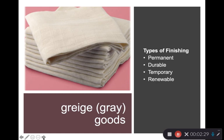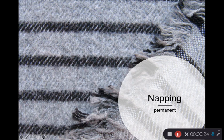A permanent finish lasts for the life of the textile. A durable finish slowly decreases over time but is expected to last at least the consumer's life of the garment. A temporary finish is washed off or dry cleaned, remaining on the product until it is cared for or cleaned. A renewable finish is one that can be reapplied by the consumer or dry cleaner after that temporary finish disappears.